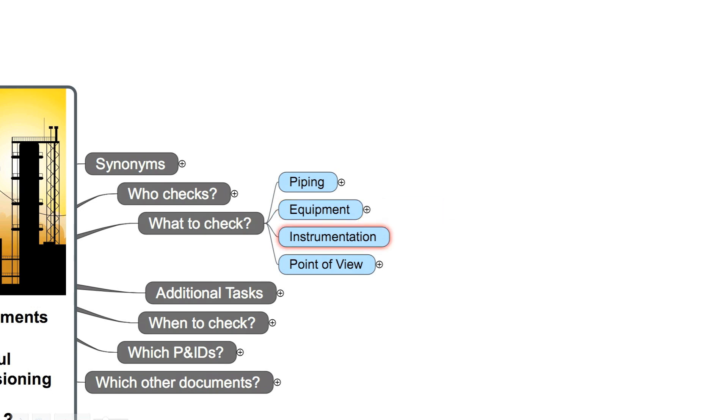All the instrumentation has to be checked. Usually this will be done together with an instrumentation engineer. You as a commissioning engineer verify the basics like nameplate, flow direction, mounting position, temperature range, and measurement range.